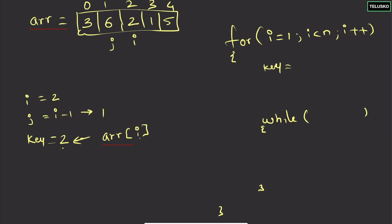The key variable gets the value arr[i], and j is set to i minus one. In the while loop, we check if arr[j] is greater than the key. The shifting part only happens when the element at j is greater than the key. Here, key is two and six is greater than two, so we perform the shift.